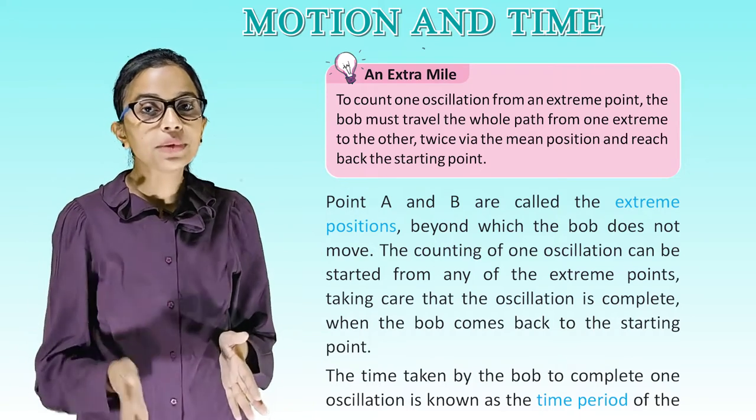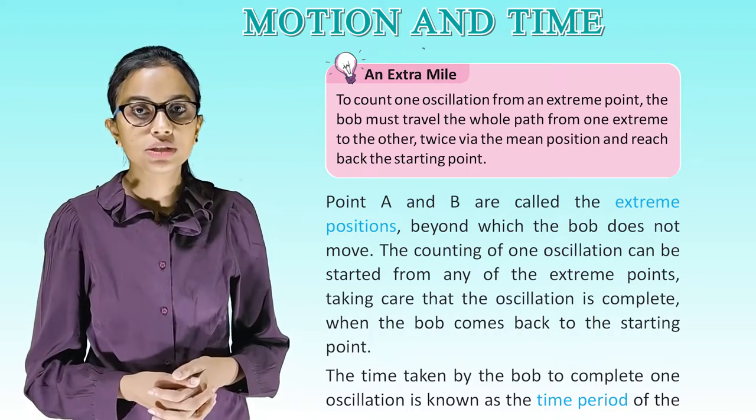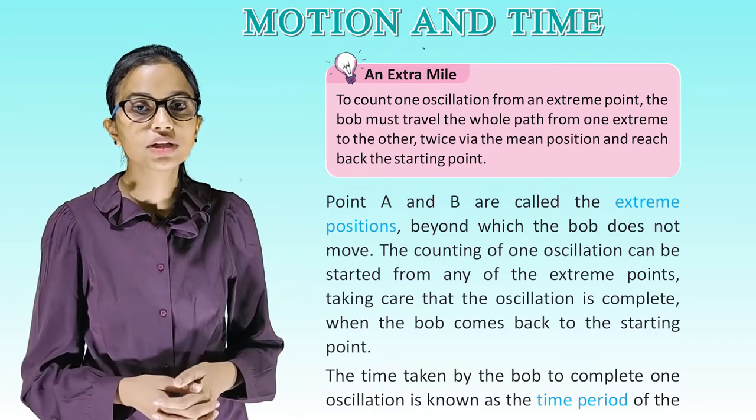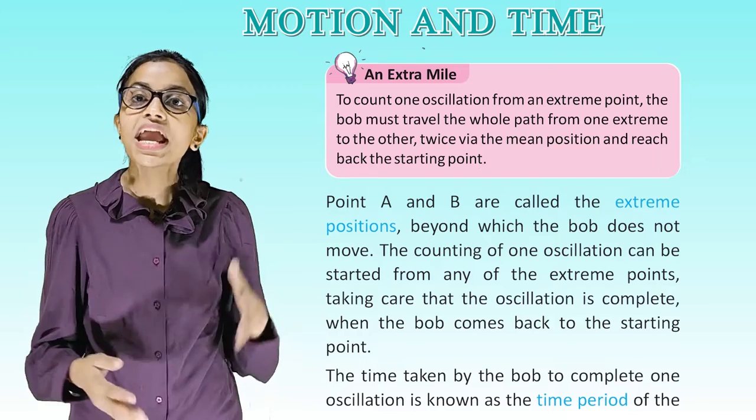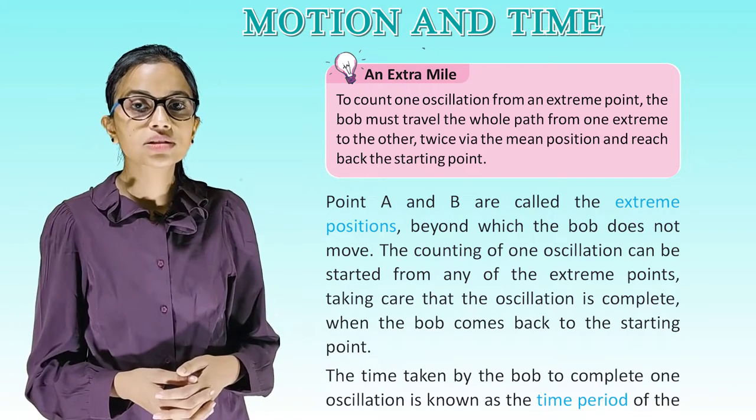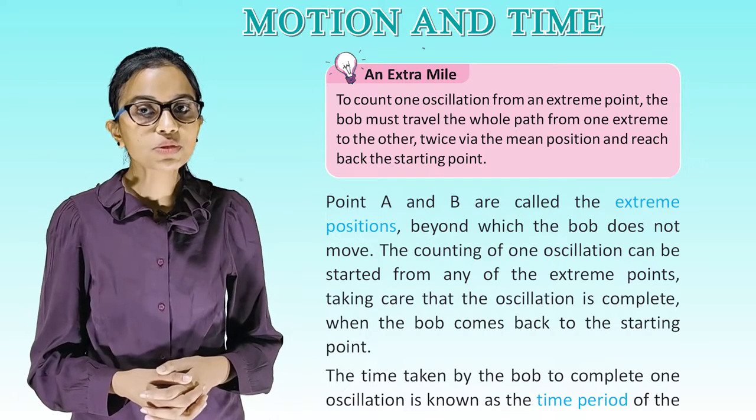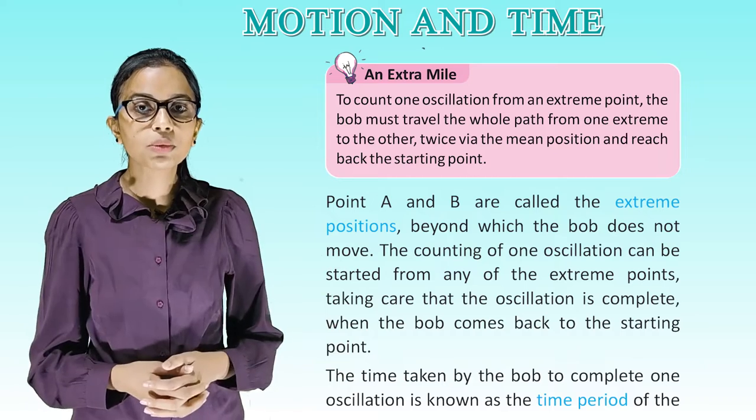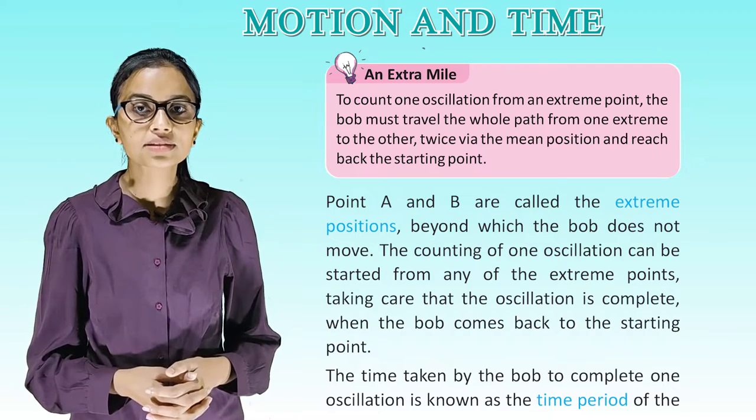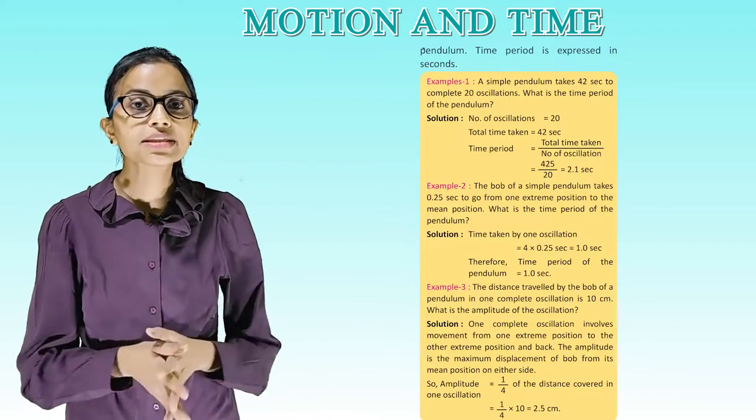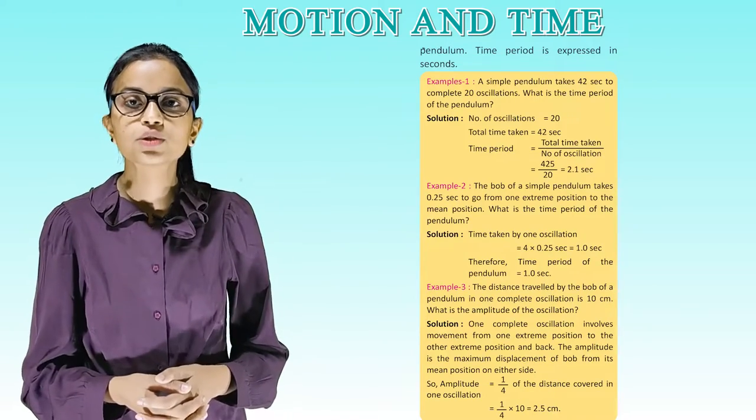Points A and B are called extreme positions beyond which the bob does not move. The counting of one oscillation can be started from any of the extreme points, taking care that the oscillation is complete when the bob comes back to the starting point. The time taken by the bob to complete one oscillation is known as the time period of the pendulum. Time period is expressed in seconds.